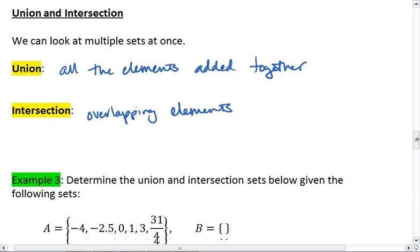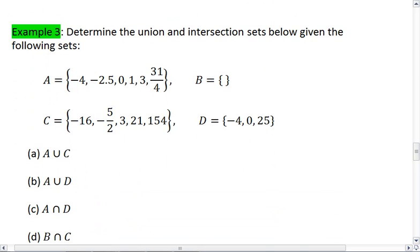So let's look at example 3 here. We want to determine the union and intersection sets below given the following sets. So you're given 4 finite sets here. You're given A, which is negative 4, negative 2.5, 0, 1, 3, and 31 fourths.